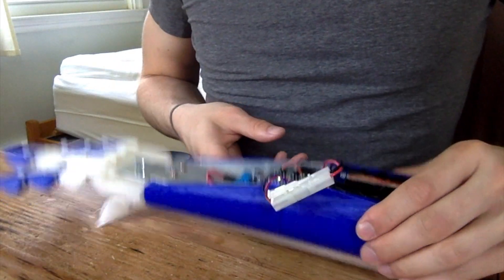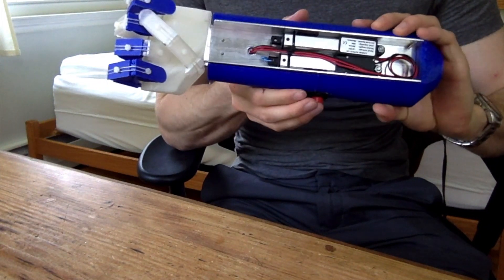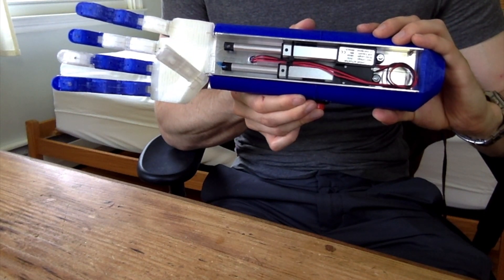After hooking everything up and connecting the battery, the hand opens and closes at the push of a button. Remember, the button is just for us for testing. In reality, a user would use the muscle sensor that we tested in part 2 and demonstrated in part 3.